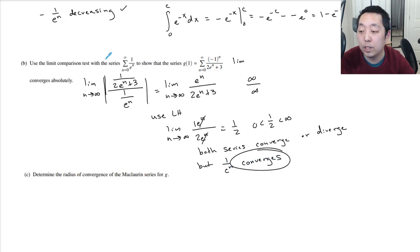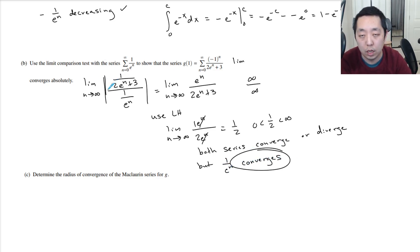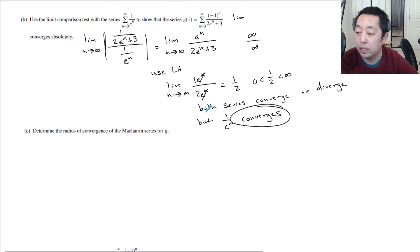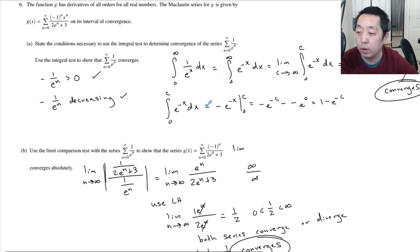And it converges absolutely because I did the absolute value — I stripped out the negative 1. I didn't run an alternating series or anything like that. Okay, that's the limit comparison test.